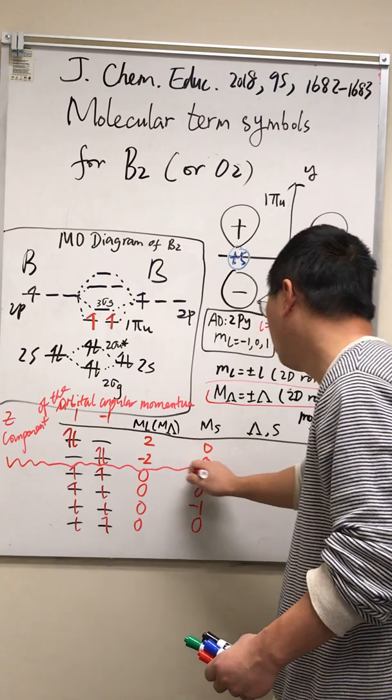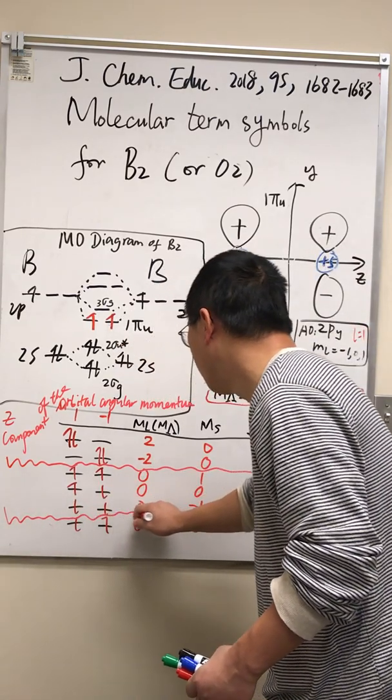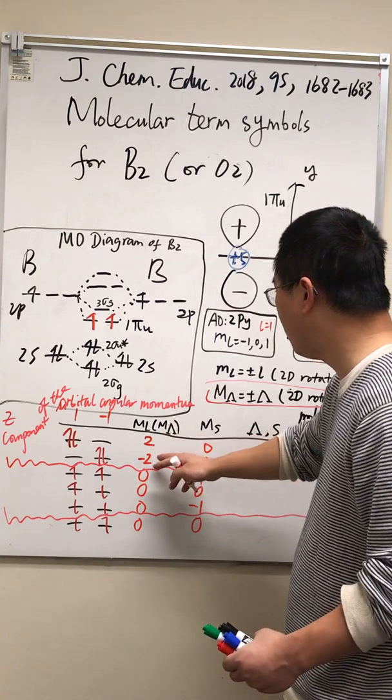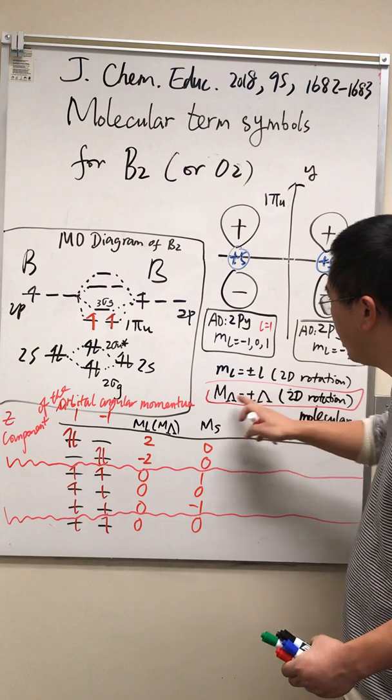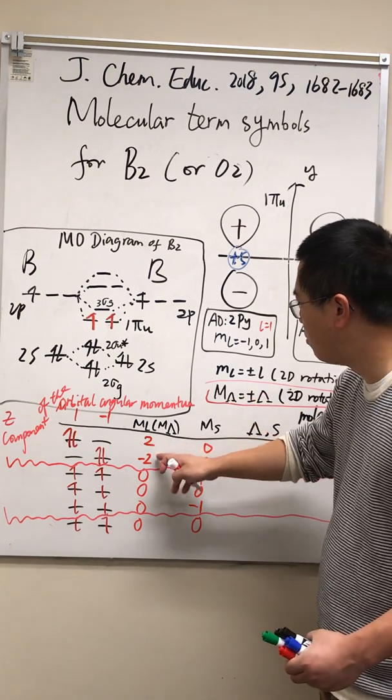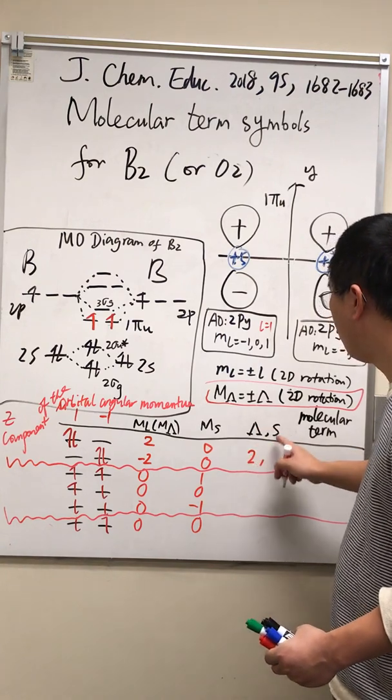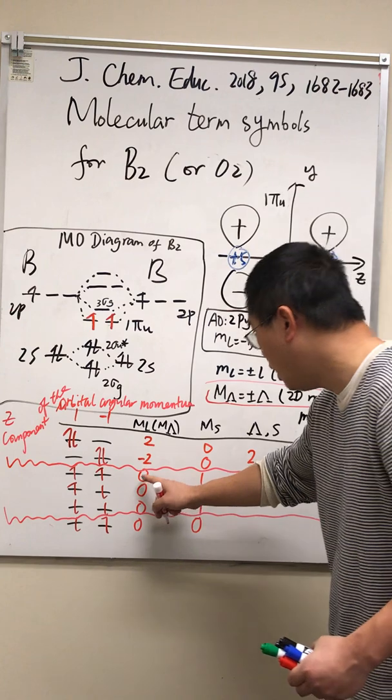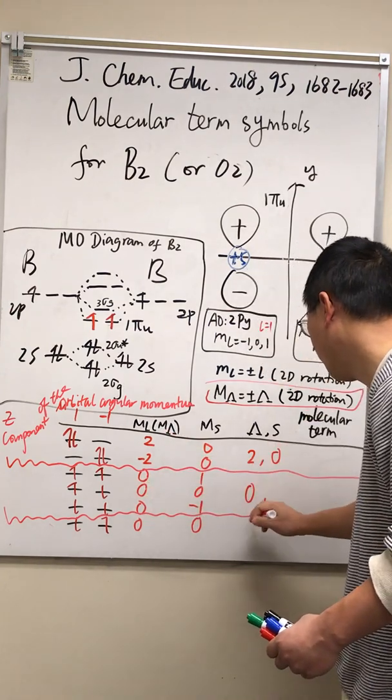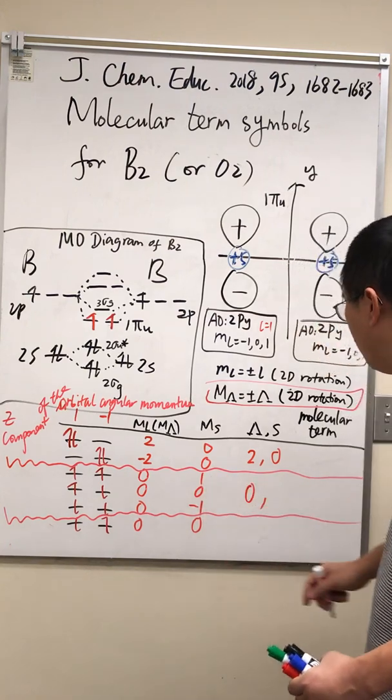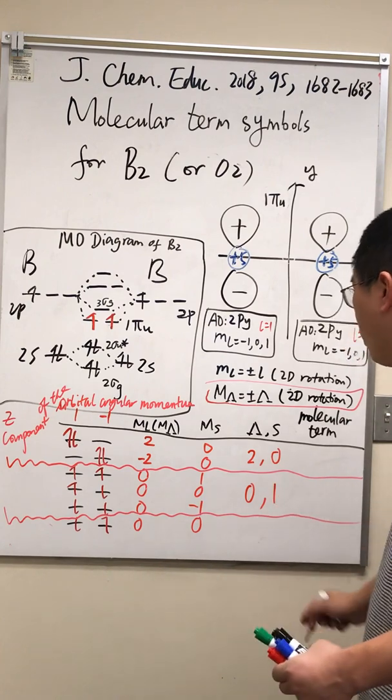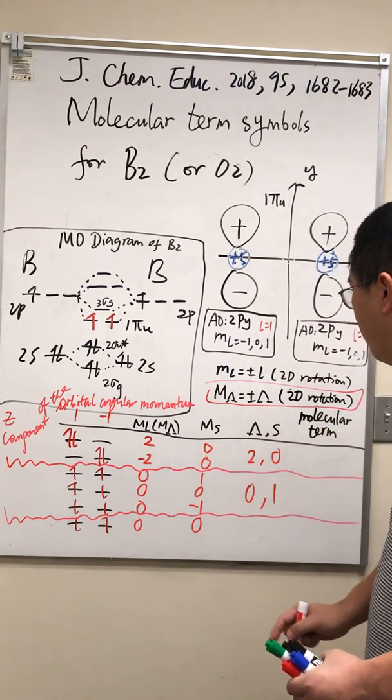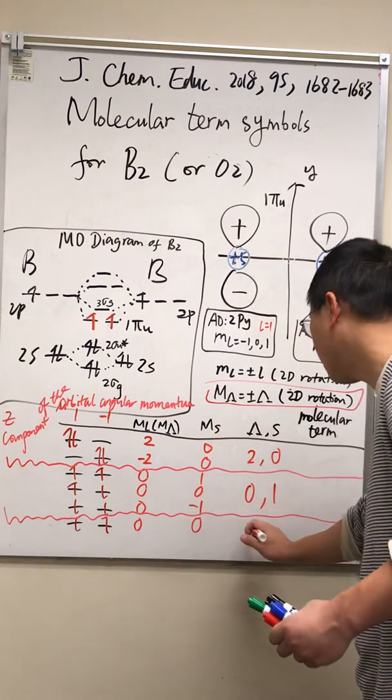Now we'll be able to group these six microstates into three molecular terms. First two rows: m lambda can be negative two, positive two. Look at this equation, m lambda equals plus minus lambda, or plus minus two. That means lambda is simply two. The spin number zero, zero, so s can only be zero here. This one, m sub lambda can only be zero, so lambda is zero. s can be negative one, zero, and one. It's a triplet and s equals one. Finally, m lambda is zero, that indicates lambda has to be zero, and m sub s is zero, that indicates s has to be zero.